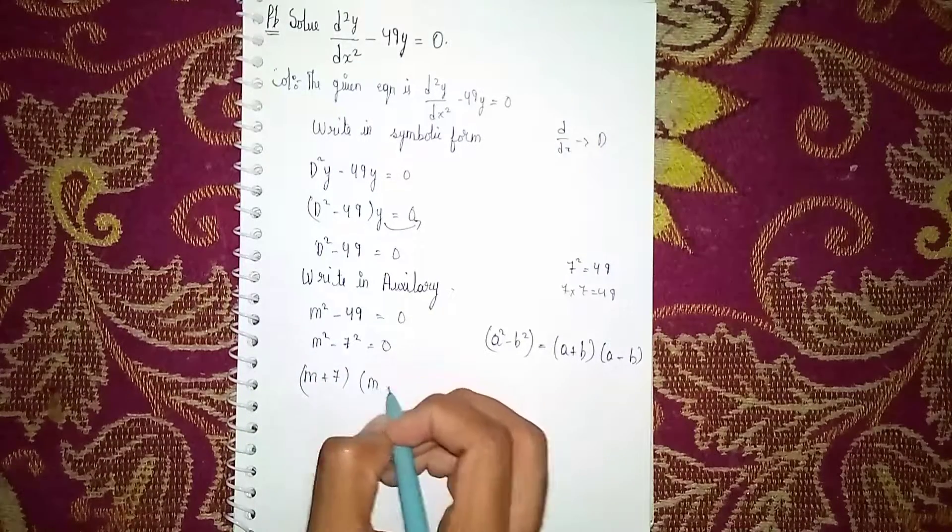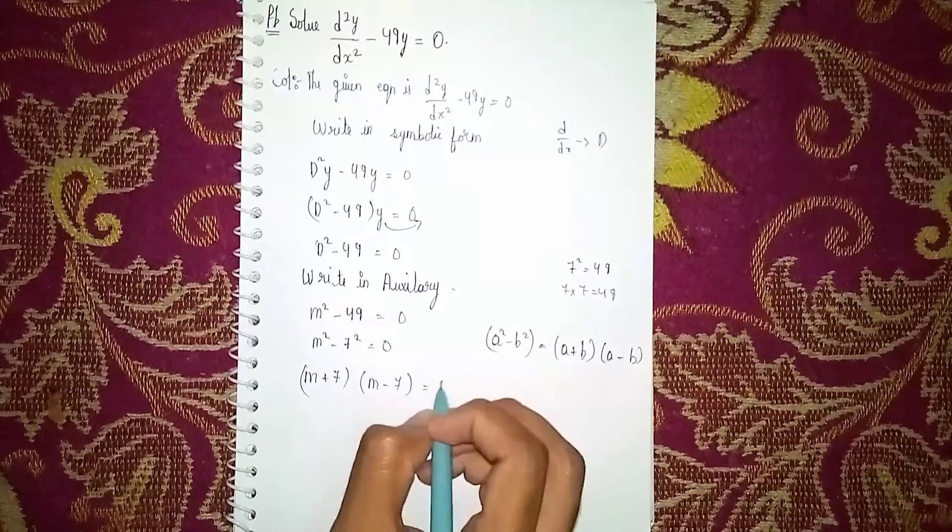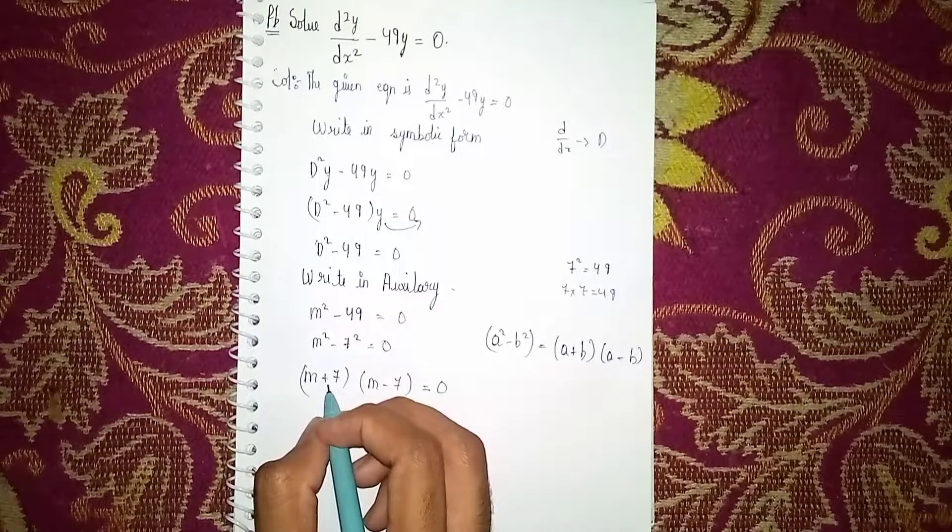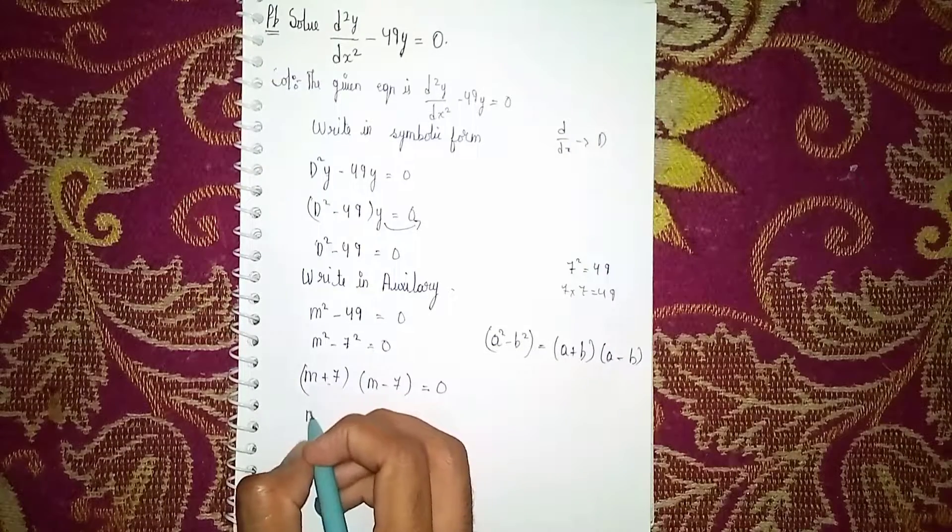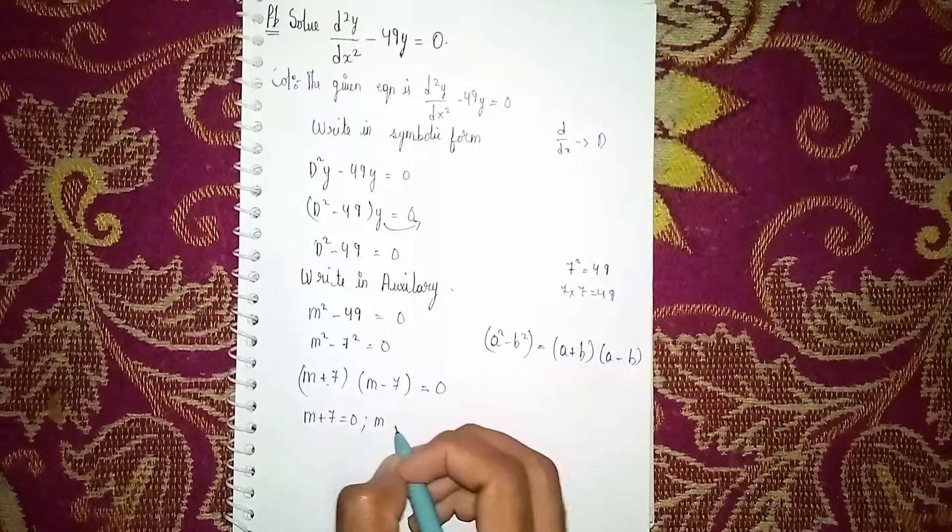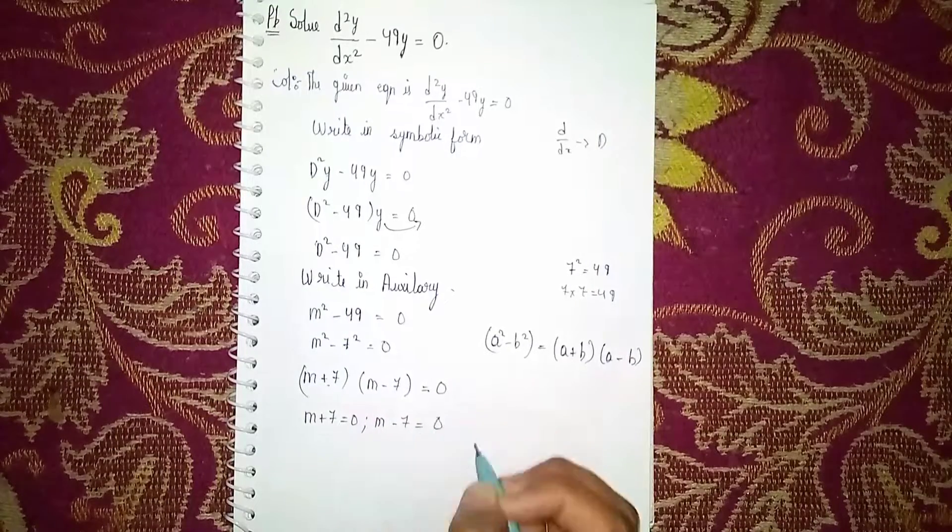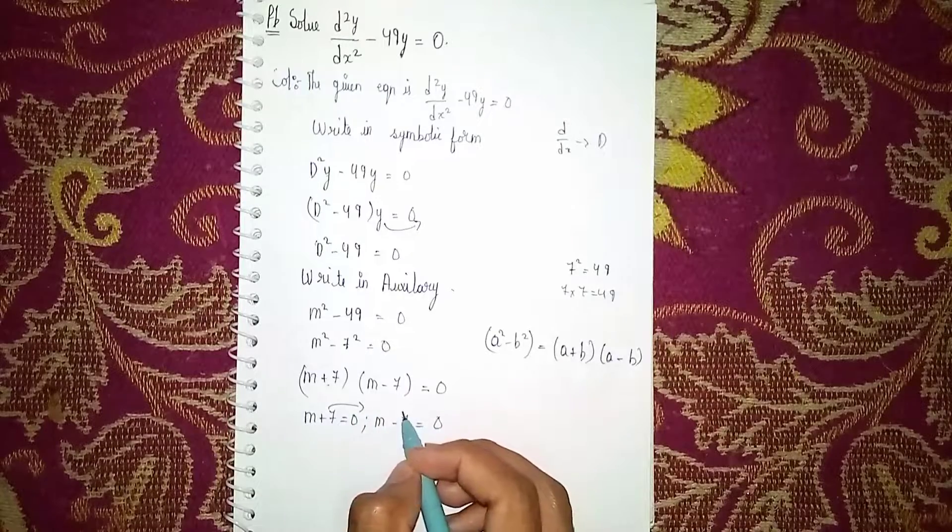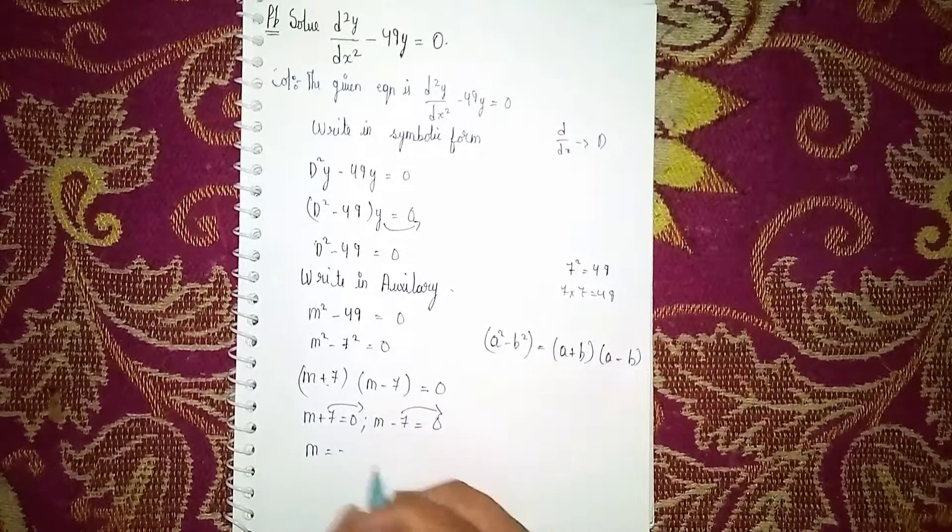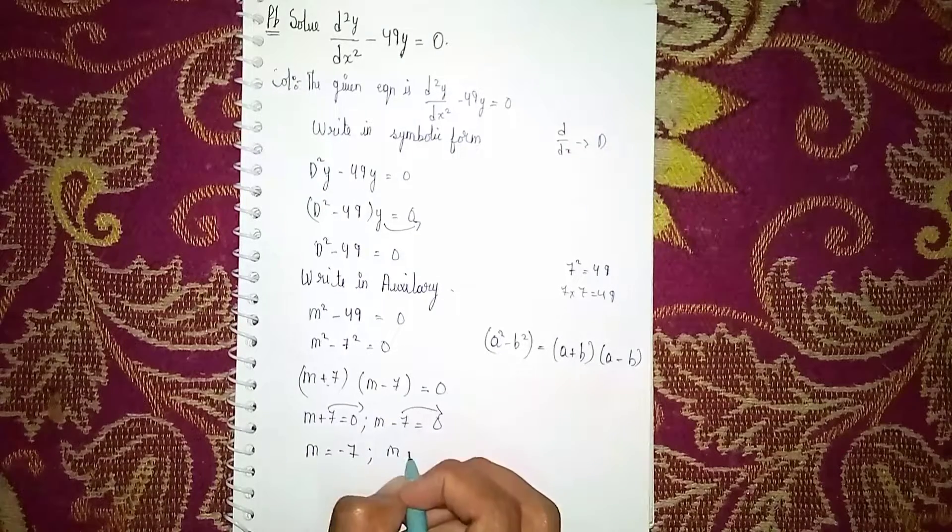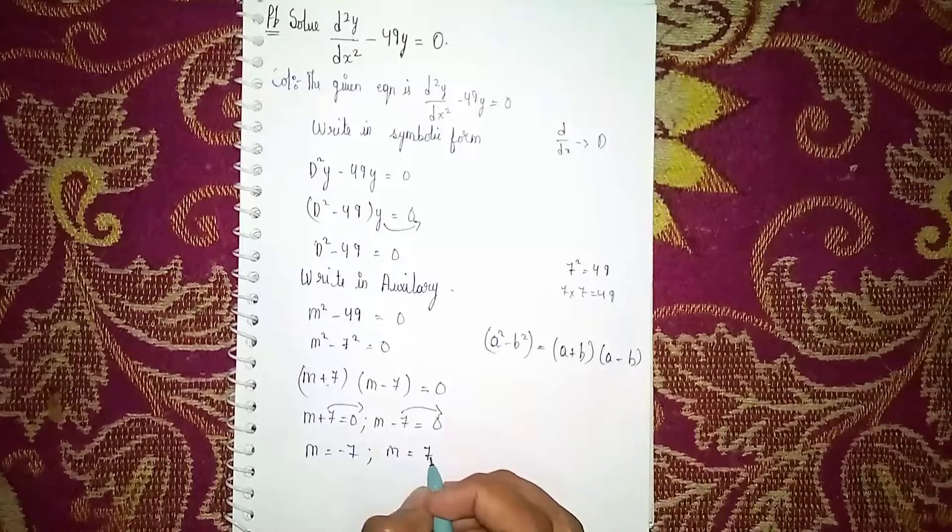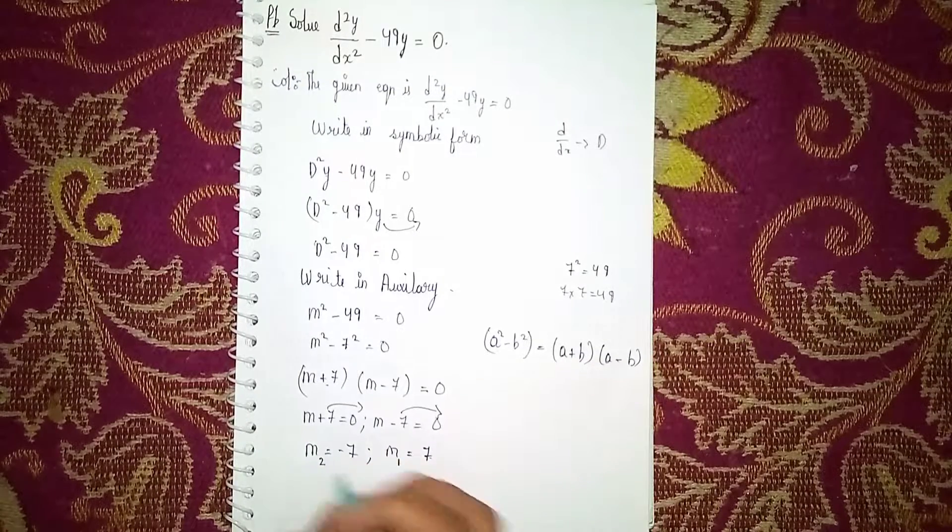Now separately equate this to 0. m + 7 = 0 and m - 7 = 0. Sending the +7 will become -7, sending the -7 will become +7. So m₁ = 7 and m₂ = -7. Here I am taking positive values m₁ and negative values m₂.